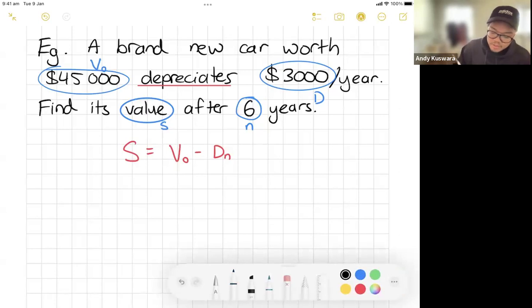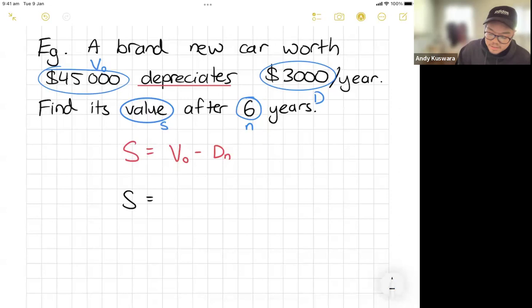So putting that into the formula, let's just go straight for it. So S equals, because I don't know what that is yet, but it's going to be V0, which is $45,000. Take away my depreciation, which is $3,000 per year. But I'm going to multiply it by six years, because that's my DN.